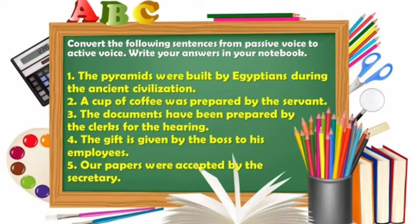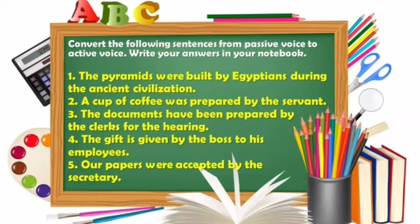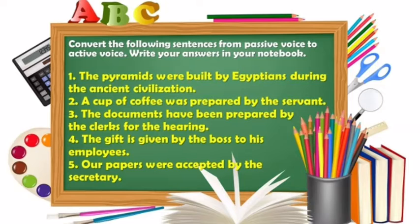Number one: 'The pyramids were built by Egyptians during the ancient civilization.' Number two: 'A cup of coffee was prepared by the servant.' Number three: 'The documents have been prepared by the clerks for the hearing.' Number four: 'The gift is given by the boss to his employees.' And number five: 'Our papers were accepted by the secretary.'